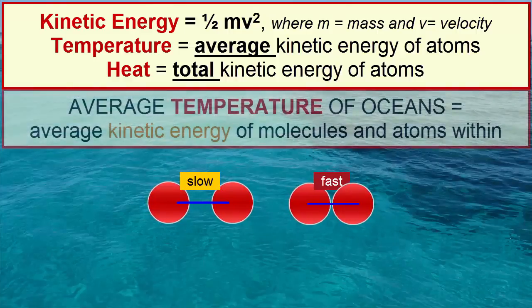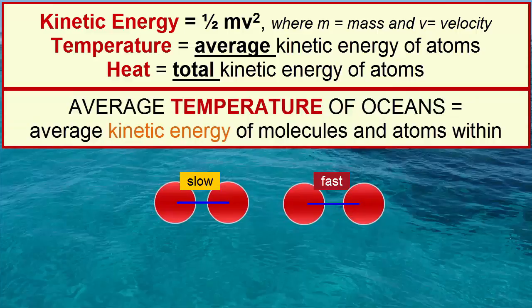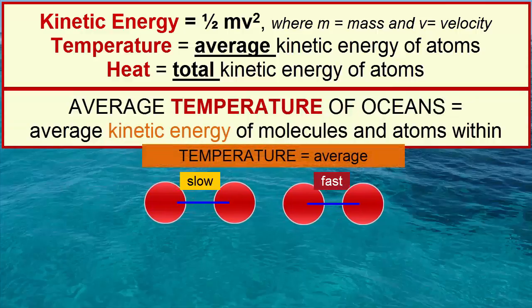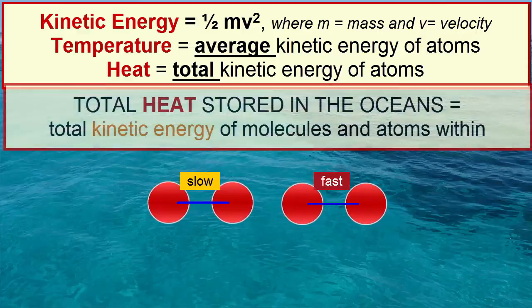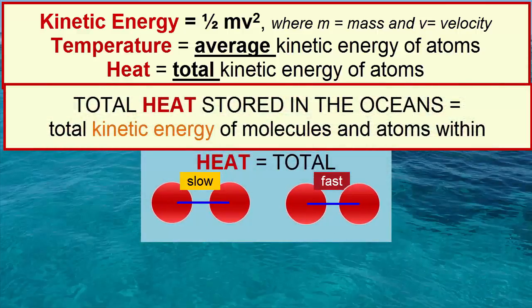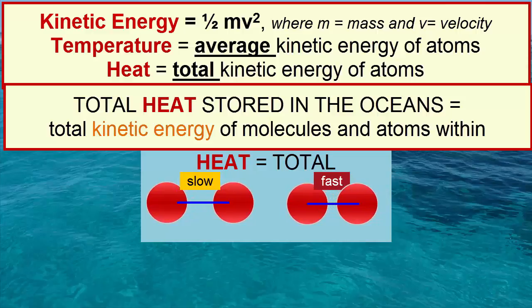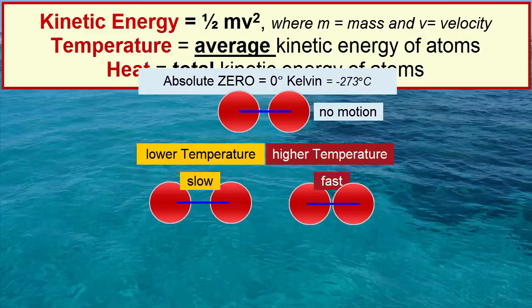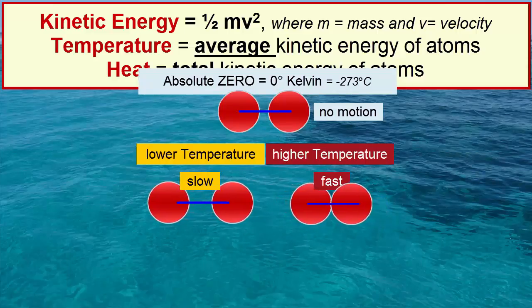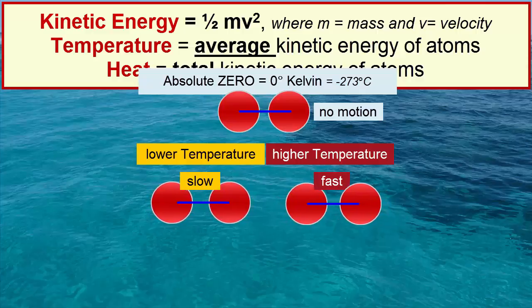We can describe the average temperature of the oceans as the average kinetic energy of all the water molecules and dissolved ions in the ocean. We can also describe the heat stored in the ocean as the total kinetic energy of all the molecules and ions combined. The lowest temperature possible is called absolute zero — it corresponds to minus 273 degrees Celsius, and it represents no motion of the atoms at all.